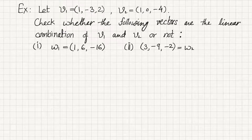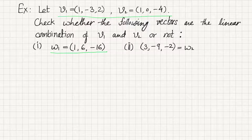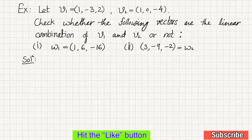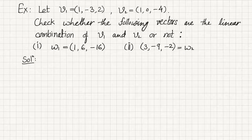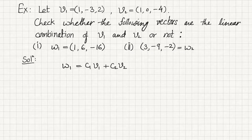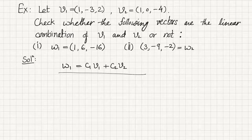Suppose we have two vectors v1 and v2. We have to check that w1 is a linear combination of v1 and v2, and whether w2 is a linear combination of v1 and v2. If we can write w as c1*v1 + c2*v2 and find the values of c1 and c2, we are done. If we cannot find such values, then w cannot be written as a linear combination.